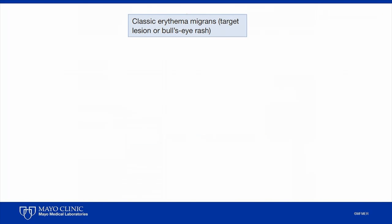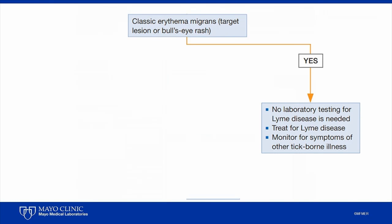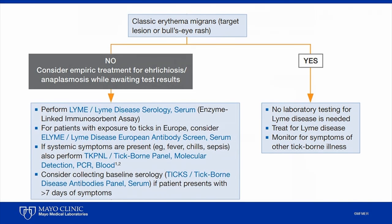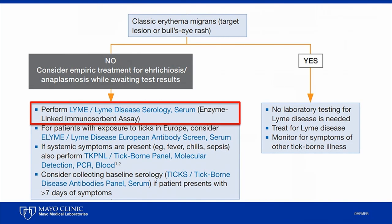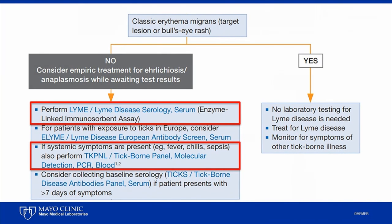The next question in the algorithm is whether a classic erythema migrans rash is present. If yes, then no testing is indicated for Lyme disease, since the presence of the classic erythema migrans rash is consistent with Lyme disease, and presumptive therapy for Lyme is indicated. If the answer is no, as it is with this patient, then one or more of the tests listed should be considered. Therapy for anaplasmosis should also be considered while waiting for test results, since this disease can be potentially fatal. In this case, Lyme disease serology was ordered, and because the patient had systemic symptoms, a PCR panel for tick-borne pathogens was also ordered.